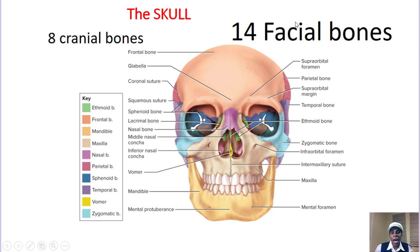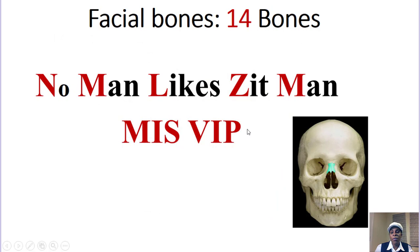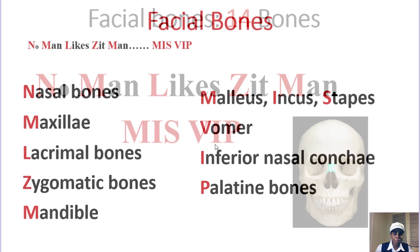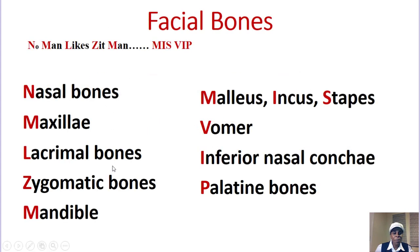Now let's look at the skull and talk about the 14 facial bones. We have a beautiful acronym: 'No man likes zit, Miss VIP.' Pretend Miss VIP is a person you're telling she shouldn't have a zit on her face. The bones are: nasal, maxilla, lacrimal, zygomatic, mandible. Then malleus, incus, and stapes — the three auditory ossicles in the ear — then the vomer, inferior nasal concha, and palatine.